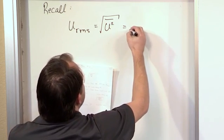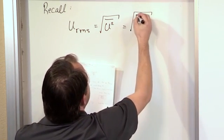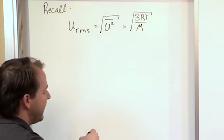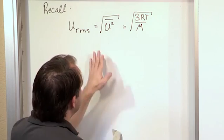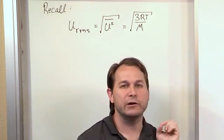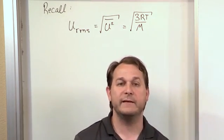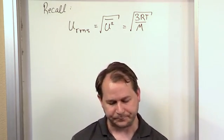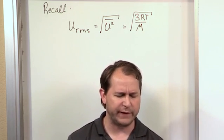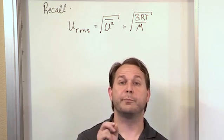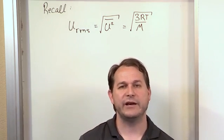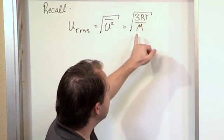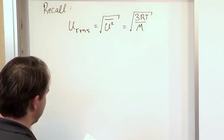And we said that this equation actually turns out with some derivation to be 3RT over capital M, which is the molar mass. And the two things that we need to know about how to use this is the molar mass needs to be in kilograms per mole, because kilogram is the base unit in SI. And the universal gas constant that we will use here is going to be 8.31451 joules per mole Kelvin, because it has that unit of energy and that's how this was derived. So we need to use the correct gas constant and we need to make sure and use kilograms per mole.